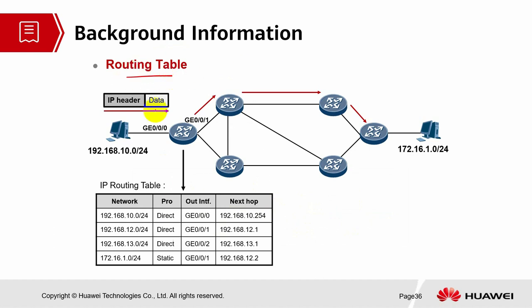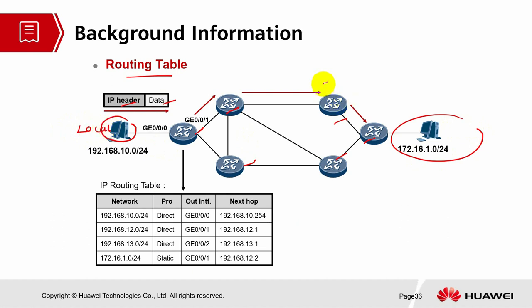For background information on routing tables: a routing table contains different routes from the local IP before it reaches the peer. The routing table consists of network IP address, protocol, output interface, and next hop.